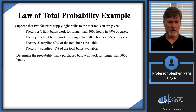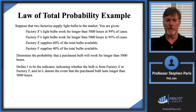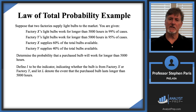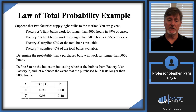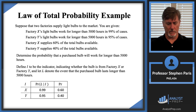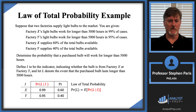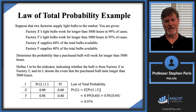Define I as the indicator for whether the bulb is from Factory X or Factory Y, and L as the event the bulb lasts longer than 5000 hours. I set up a table with P(L | I) and the probabilities for each factory. The total probability that the bulb lasts longer than 5000 hours is the expected value — the sum product — which gives 0.974, exactly what I got in the law of total probability video.